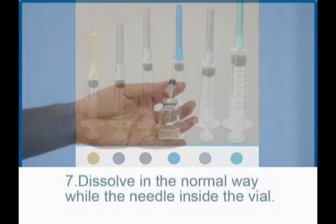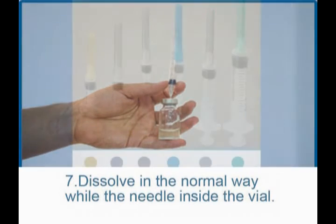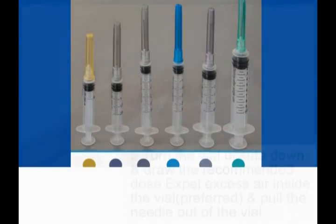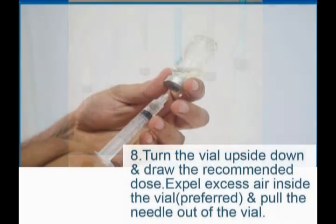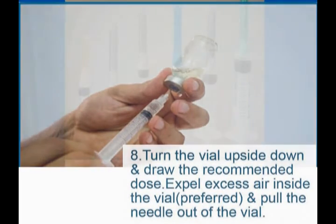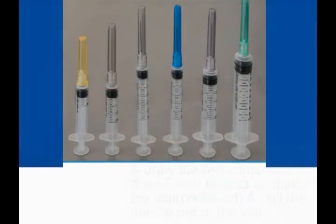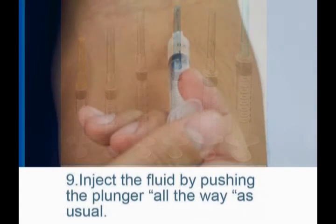Dissolve in the normal way while the needle is inside the vial. Turn the vial upside down and draw the recommended dose. Expel excess air inside the vial if preferred and pull the needle out of the vial. Inject the fluid by pushing the plunger all the way as usual.